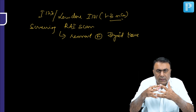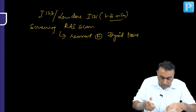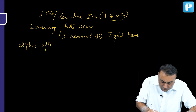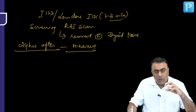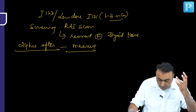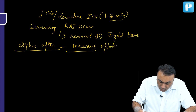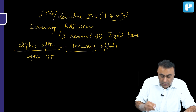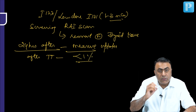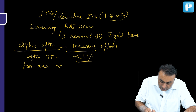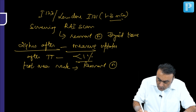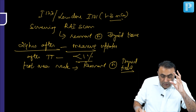You give iodine-123 or low-dose iodine-131, and 24 hours later, you measure the uptake. Normally, after total thyroidectomy, the uptake should be less than 1%. If it is more than 1%, or a hot area is found in the neck, that indicates the presence of remnant normal thyroid tissue.